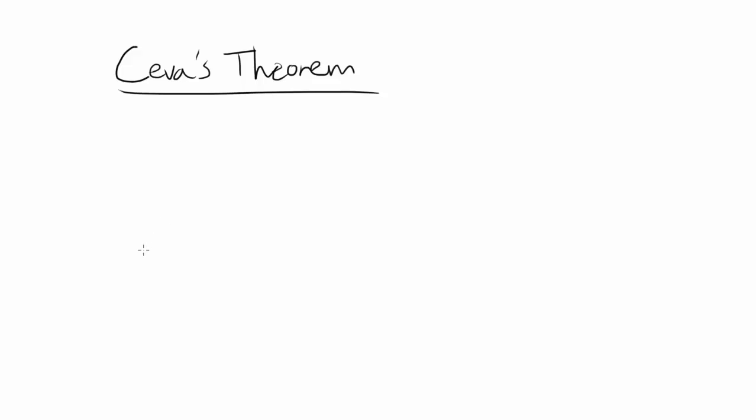We are going to start with Ceva's theorem by drawing a triangle. And what Ceva's theorem is used for is to show that three cevians are concurrent. So let me introduce you to two terms: cevians and concurrent.